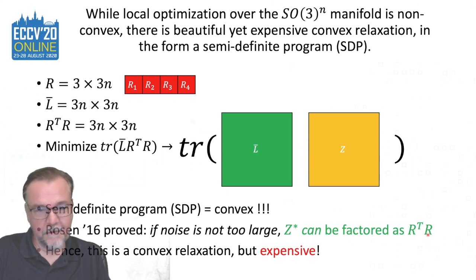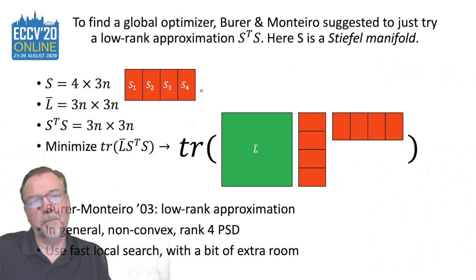Well, in 2003, for this type of problems, Boumal and Monteiro suggested that we could just take a low-rank approximation, S transpose S, where S is a product of Stiefel manifolds. Instead of three-by-three matrices that we can concatenate and that are orthogonal, we now take four-by-three matrices where the columns remain orthonormal.